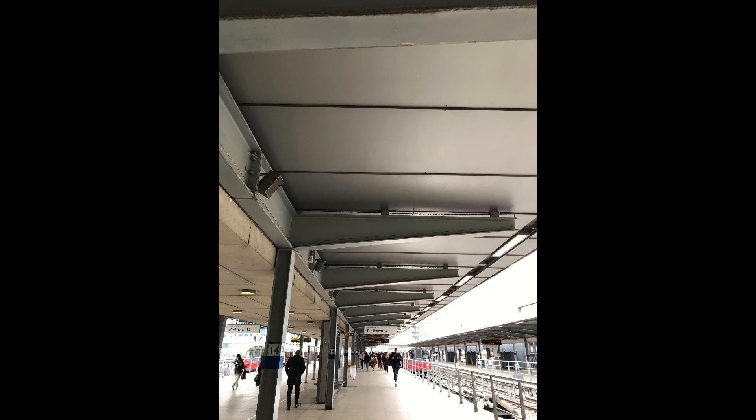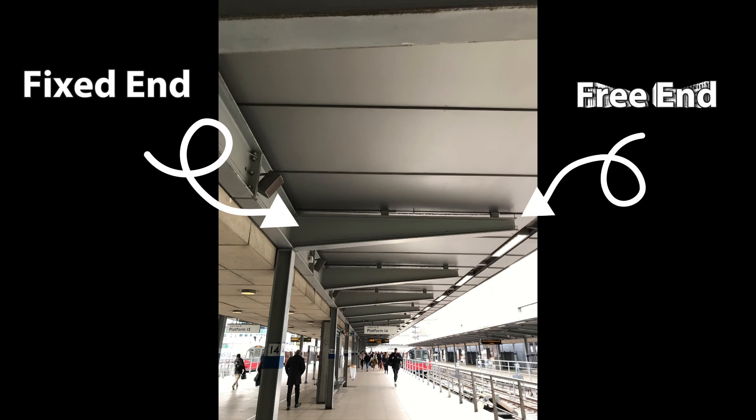And I'm going to show you one picture which will really make the things very clear. I took this picture at Stratford Station near Jubilee Line in London. You will see that where the beam is fixed, it has more material. The section is deeper. Whereas at the free end, there is lesser material.